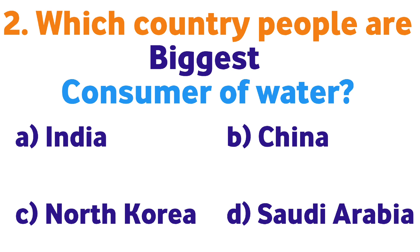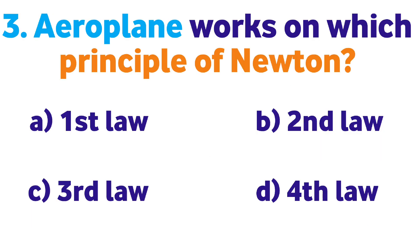Question number two: Which country's people are the biggest consumers of water? Option A: India, B: China, C: North Korea, D: Saudi Arabia. Correct answer is B: China.